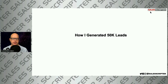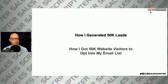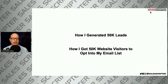This is Michael Halper with SalesScripter. The topic today is how I generated 50,000 leads. To be more specific, what I'm going to talk about is how I got 50,000 website visitors to opt into my email list. That was a bit long for the title, so I shortened it, but I just want to make sure you know what we're going to talk about today.